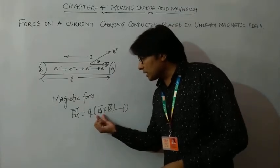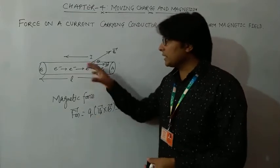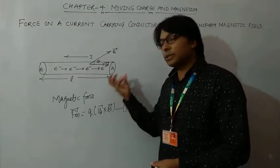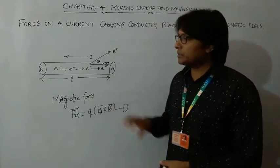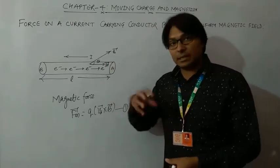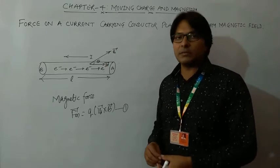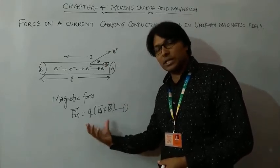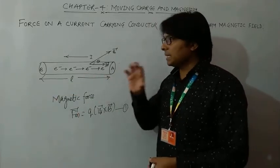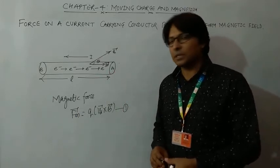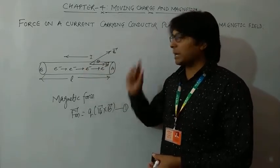Since the electrons experience a force, and these electrons are confined within the conductor itself, the conductor will also experience a force. That is the origin of force on this current carrying conductor — the current flows due to electrons, and whenever electrons or any charge flow in a magnetic field they experience a force, so the conductor experiences that same force. We want to derive the formula in terms of current, length, and magnetic field B.